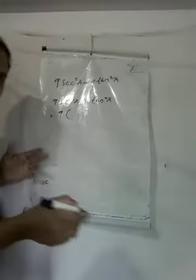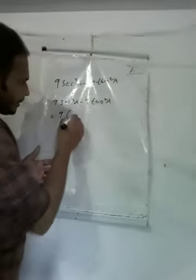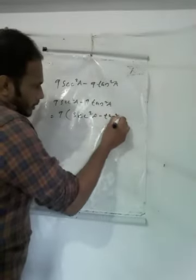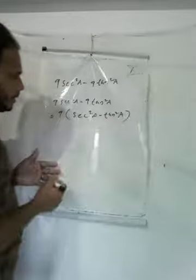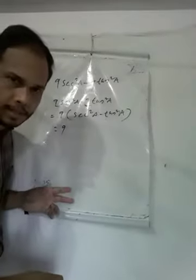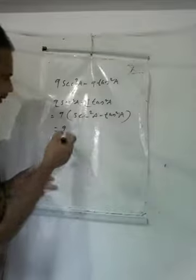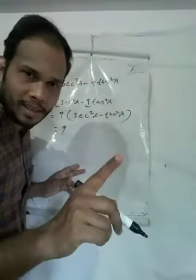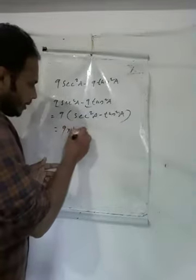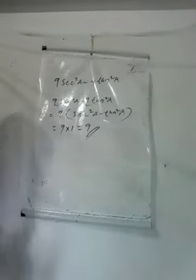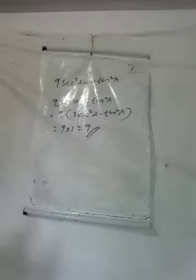You can take 9 outside. Then what is 6²A minus 10²A? So 9 into 9 is common — you can take 9 outside. 9 into (6²A minus 10²A) equals 1. So 9 into 1 equals 9. The correct answer is 9.